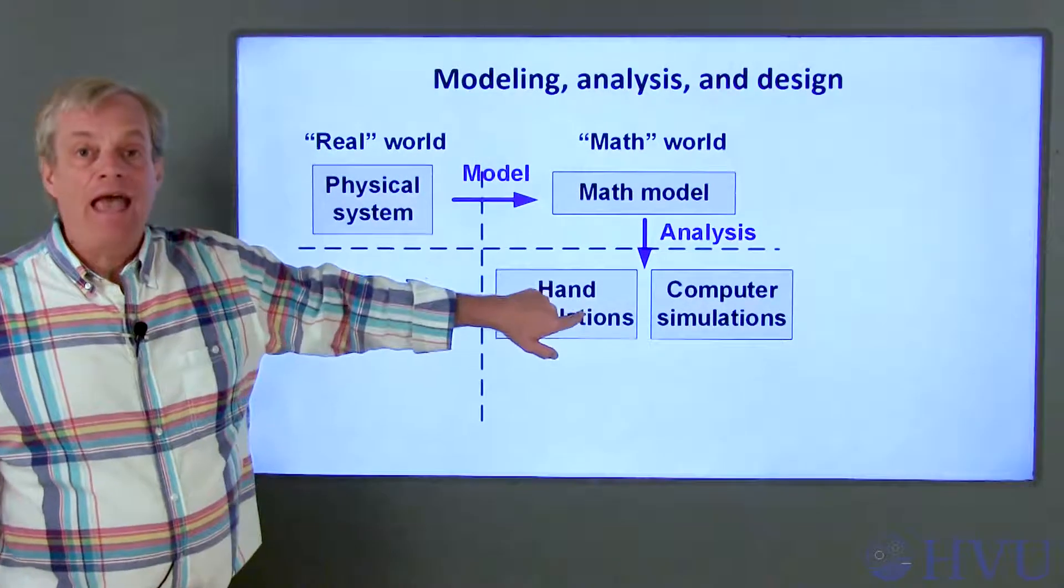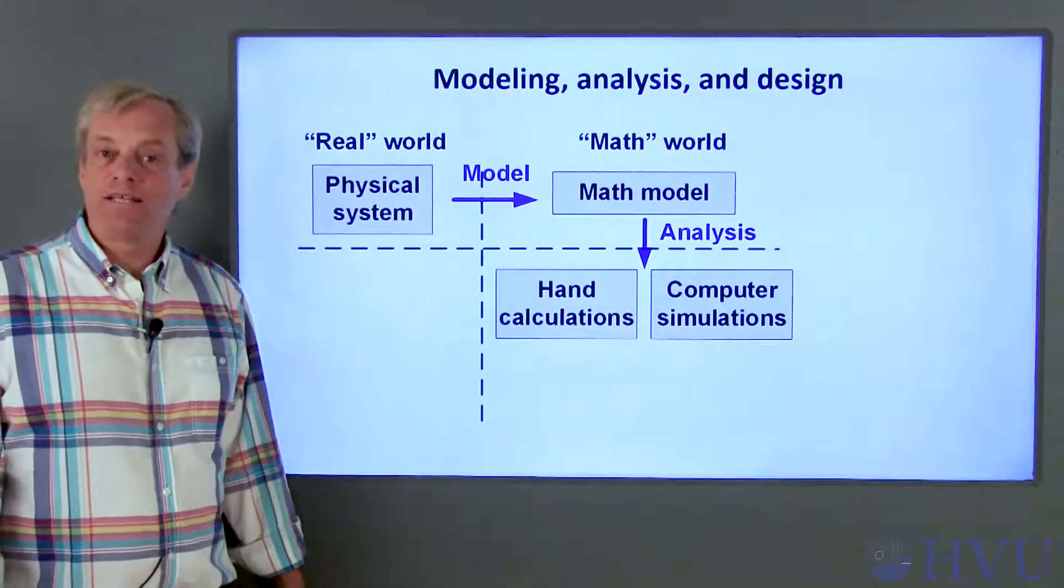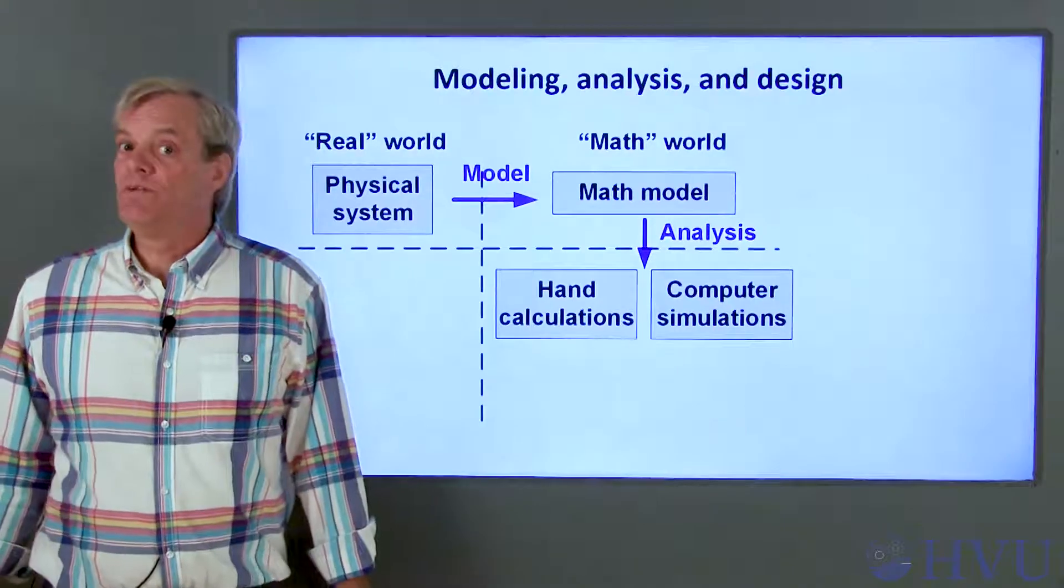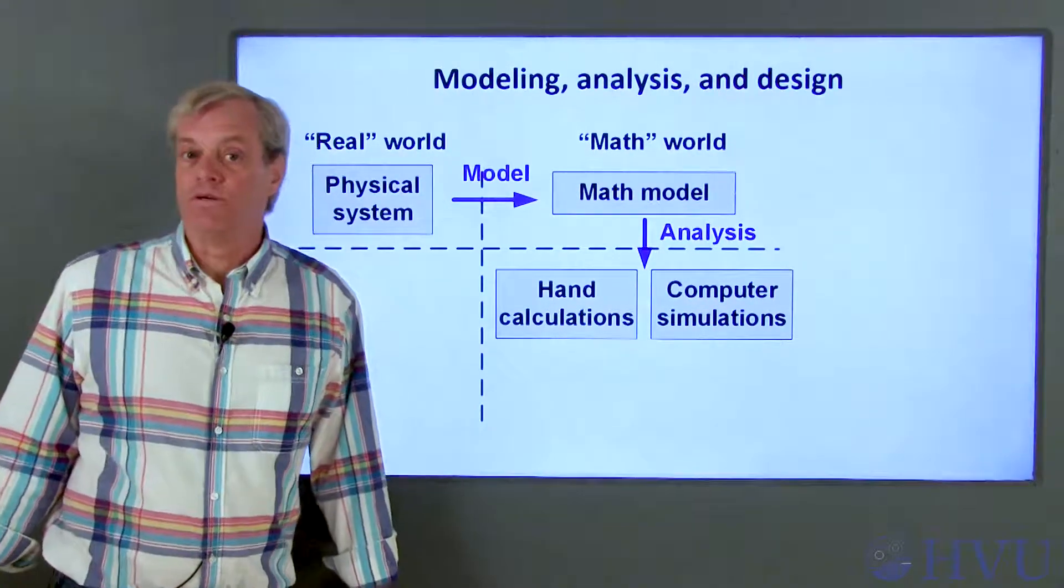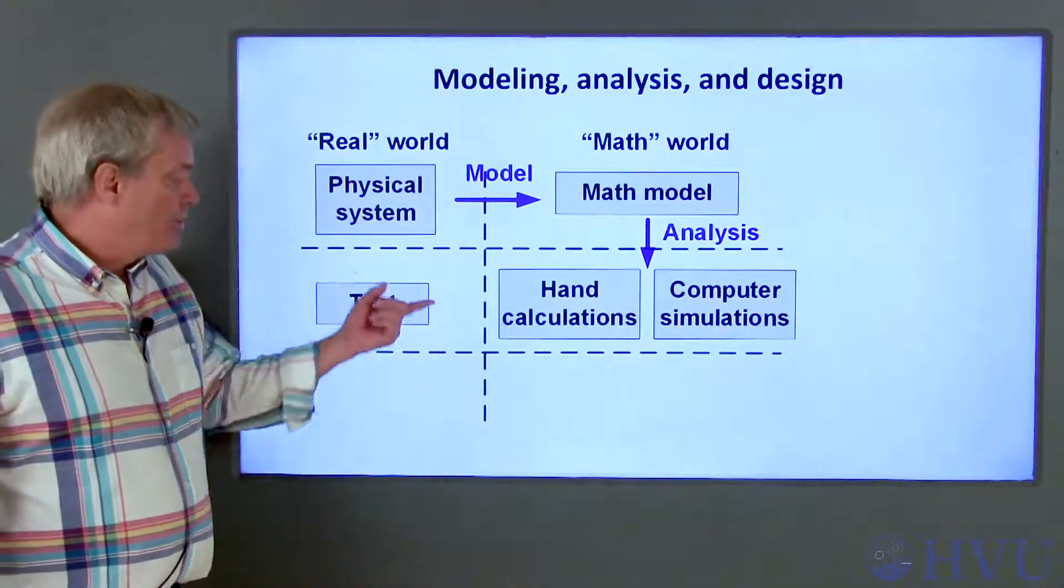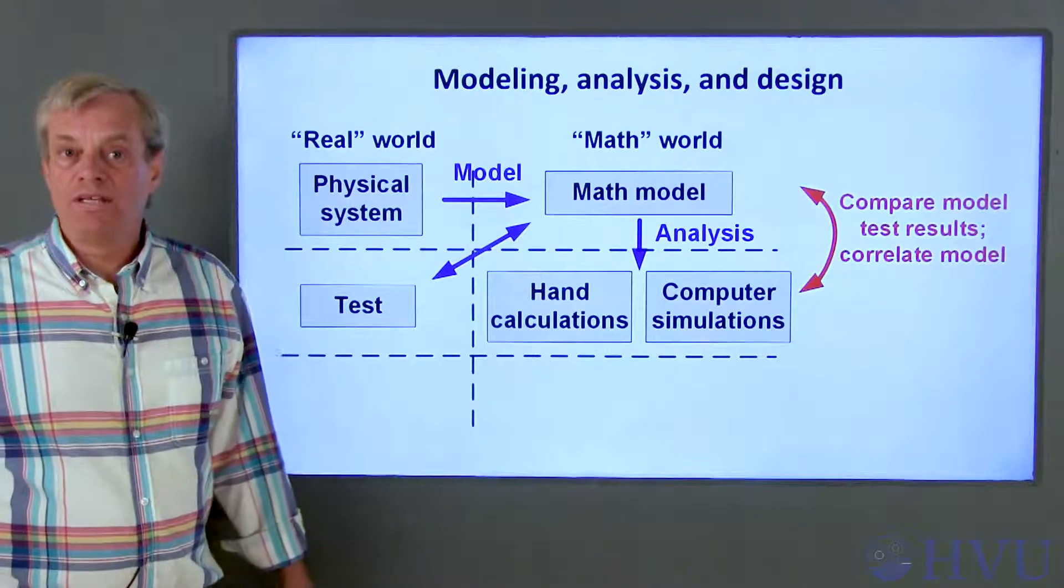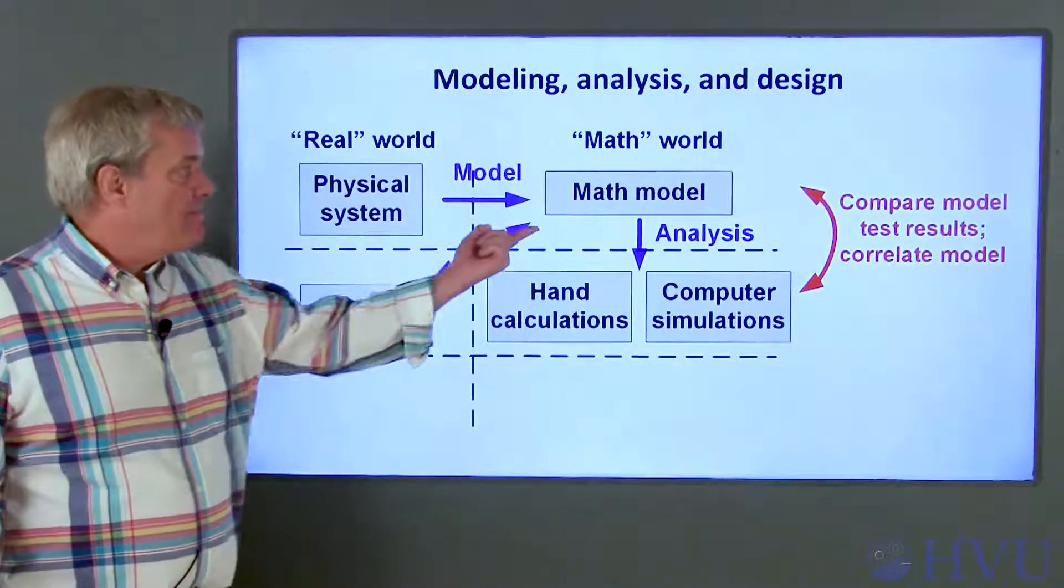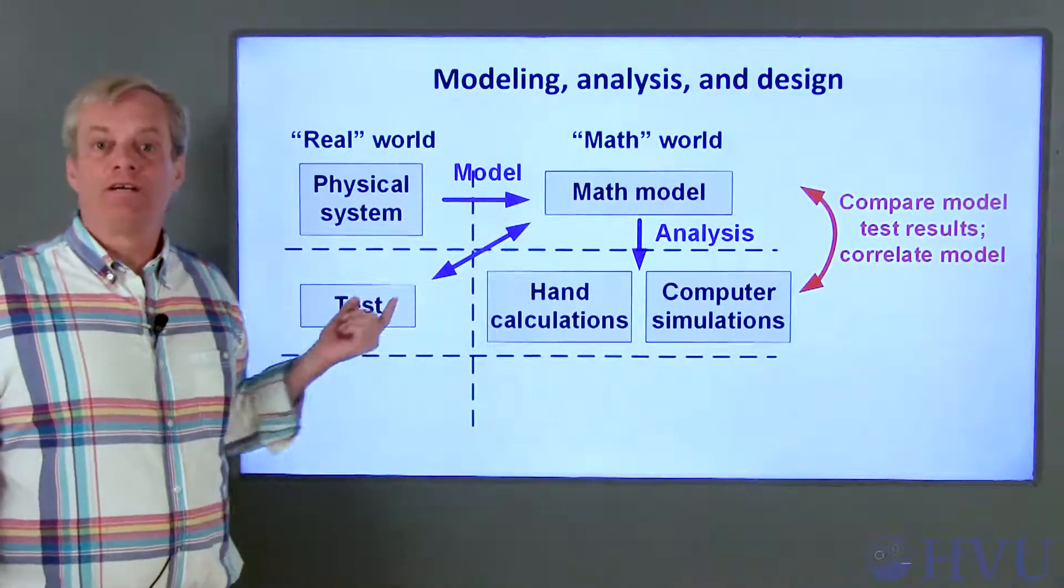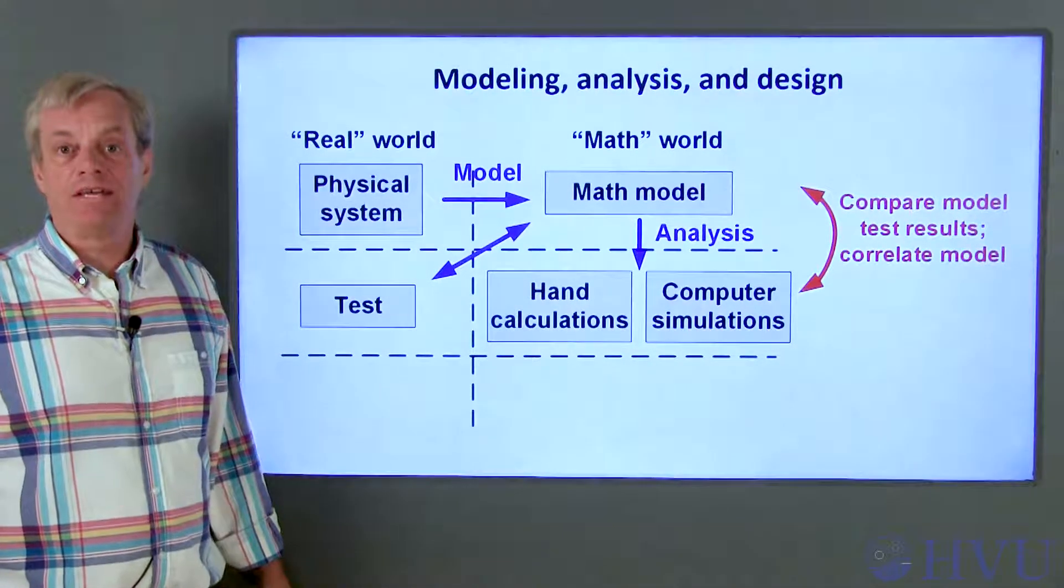In mathematics land, we can analyze the system to see what we think the physical system will do. Depending on the complexity of the mathematical model, we can either do hand calculations to analyze the system or simulate the system response using a computer. We'll likely use the analysis and the preliminary design to build prototype hardware and test it. One huge benefit of this early testing is to make sure that our mathematical models are actually predicting what's happening.